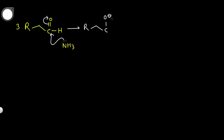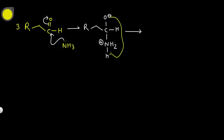After nucleophilic attack you get an intermediate with OH and NH3+. Because there is a positive charge on the nitrogen and an O-minus on the oxygen, the O-minus will take a proton from NH3+. There is a proton exchange — O-minus gains a proton and NH3+ loses a proton — giving RC(OH)(NH2)H.